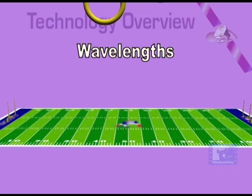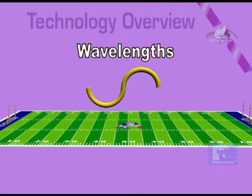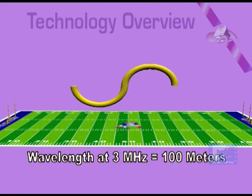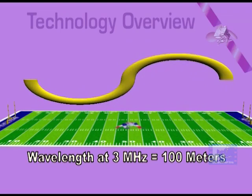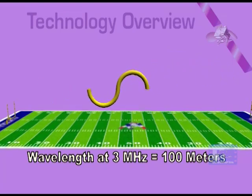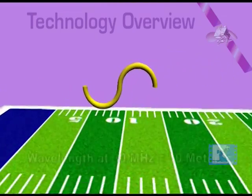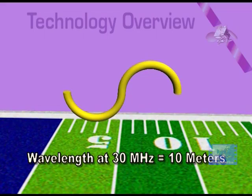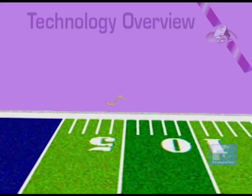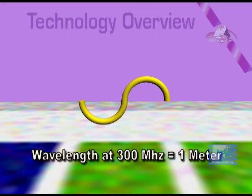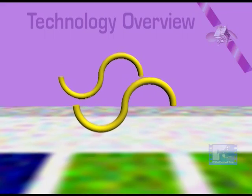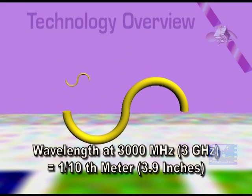Each frequency has a specific wavelength, which is the actual distance that the radio wave travels during one complete cycle. With the higher the frequency, the shorter the wavelength. The most efficient way to capture any radio signal is to use an antenna with physical dimensions that are a multiple or submultiple of the desired signal's wavelength.